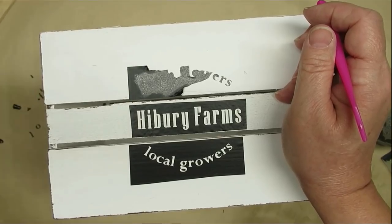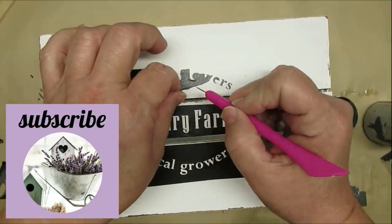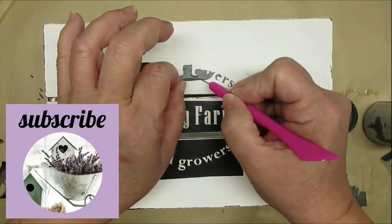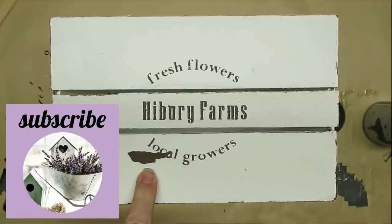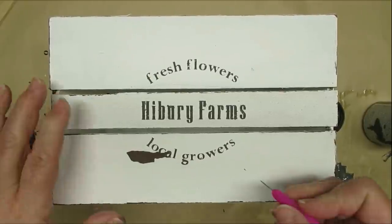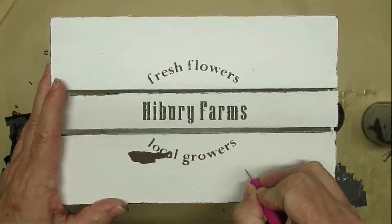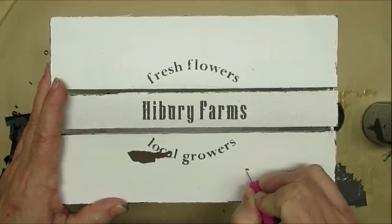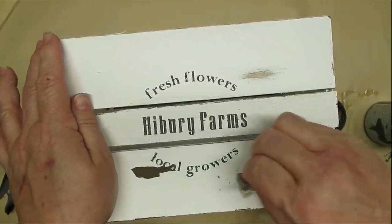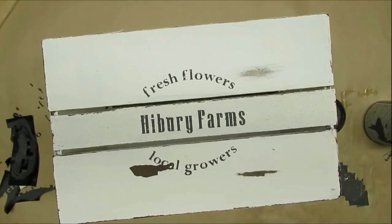As I was peeling the stencil off, I did end up pulling up a little bit of the paint, especially down at the bottom. There's a huge chunk there, but that's okay. I want things to be distressed, so I'm just going to take my weeding tool here and pick off some of the paint and make some more distressed marks similar to that one.